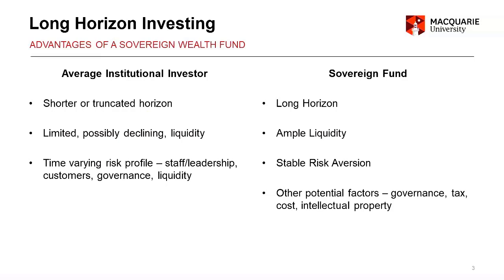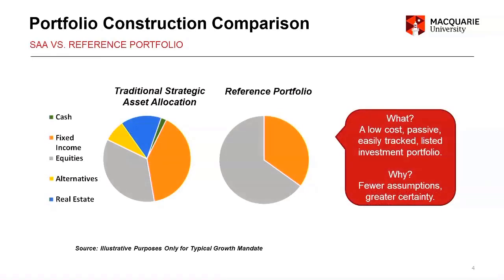A lot of sovereign funds, when they started, picked up a standard balanced fund template and said we want diversification across a few different asset classes. But what New Zealand did — and a lot of other sovereign funds — was say that doesn't make sense for us, because we are different from the average investor. So we said we don't need a balanced asset allocation approach. If you think about why you need diversification, it's our only free lunch, but we only need it because we either don't have ample liquidity or we can't ride out a cycle.